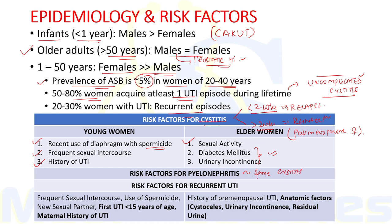The risk factors for pyelonephritis are almost similar to those for cystitis, as the infection spreads from the bladder to the kidneys via the ureters. For recurrent UTI in young females, the only consistent behavioral risk factors are frequent sexual intercourse and use of spermicidal agents; a new sexual partner, first UTI episode before age 15, and maternal history of UTI are other important risk factors. In older women, history of pre-menopausal UTI, anatomic factors affecting bladder emptying like cystocele or urinary incontinence, and residual urine after micturition are important risk factors.